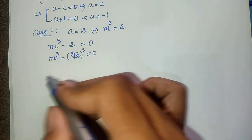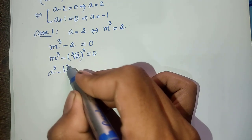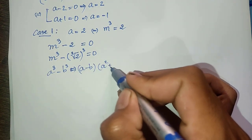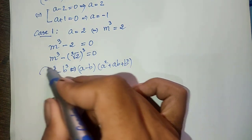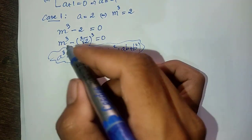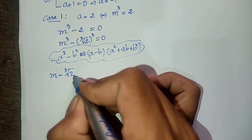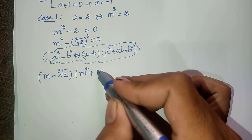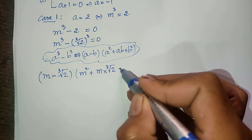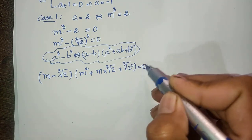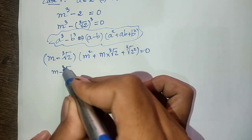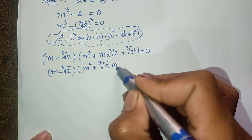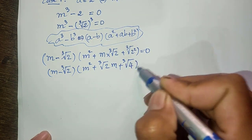We use the rule: a power 3 minus b power 3 equals (a minus b) times (a squared plus ab plus b squared). Applying this formula, we get (m minus cube root of 2) times (m squared plus m times cube root of 2 plus cube root of 2 squared) equals 0. This simplifies to (m minus cube root of 2) times (m squared plus cube root of 2 times m plus cube root of 4) equals 0.